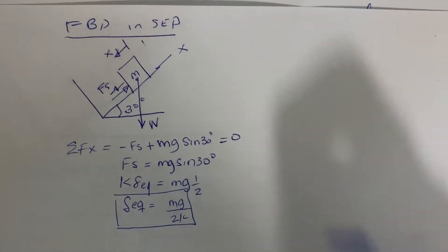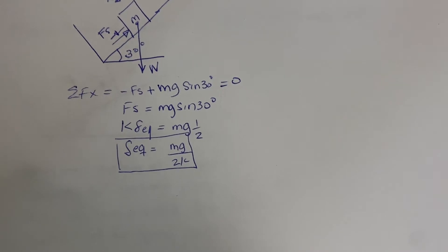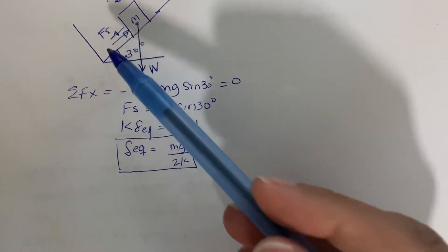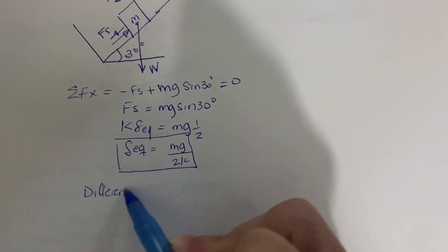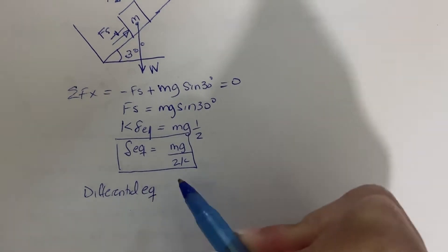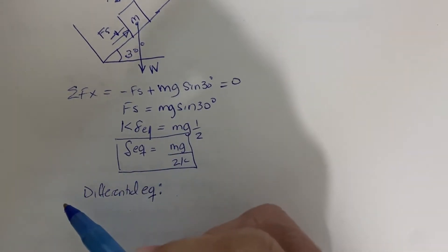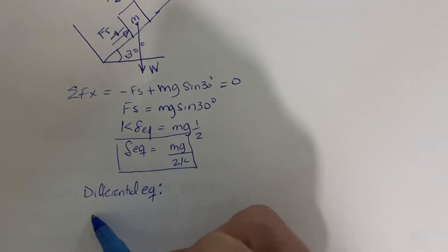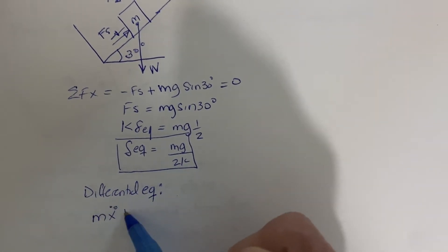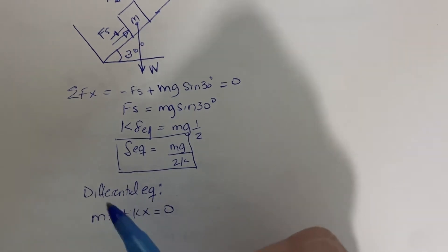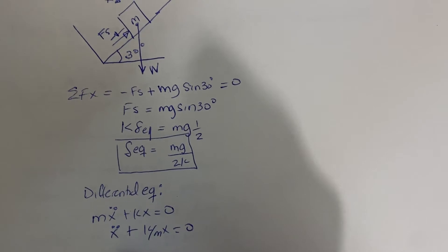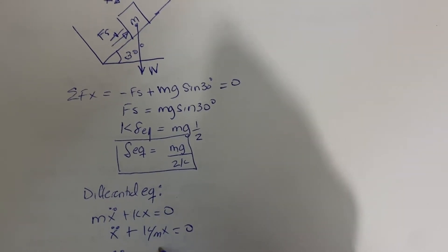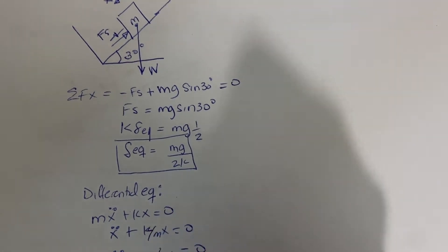Now let's write the differential equation governing the movement of this mass on the spring. Recognizing there is no damping, the equation of motion simplifies. Rearranging terms, we get ẍ + ωₙ²x = 0, because k/m equals ωₙ².